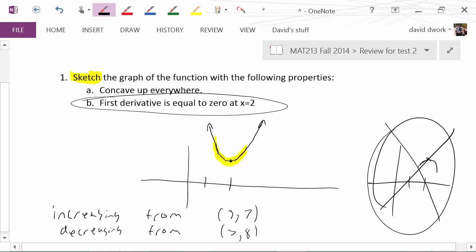So you have to think about how could I create a graph where now it's concave up everywhere, but it is increasing from 3 to 7. So there's 3, 4, 5, 6, 7. Alright, so this graph right now is fitting that idea, it's increasing from 3 to 7. But now I need it to be decreasing from 7 to 8.